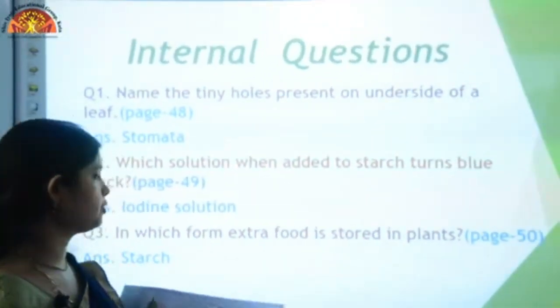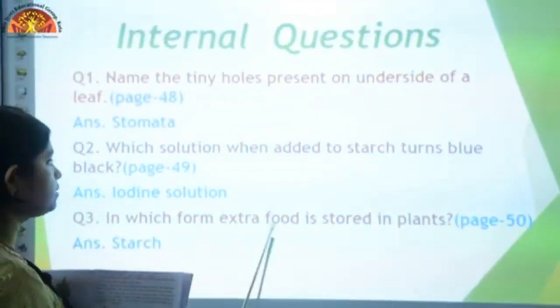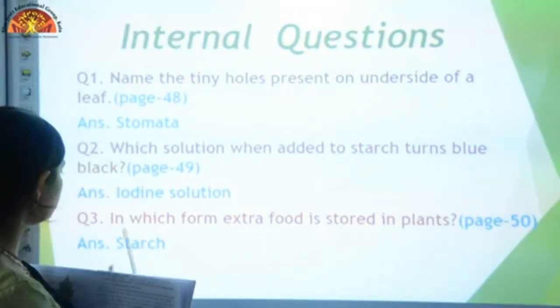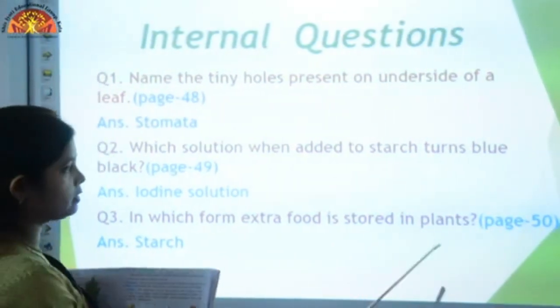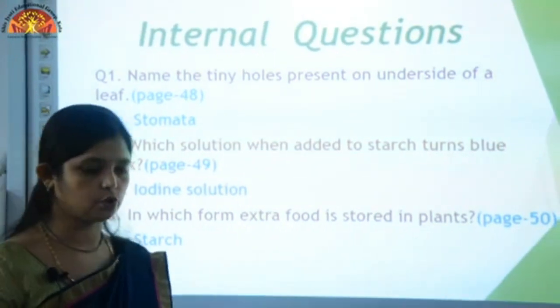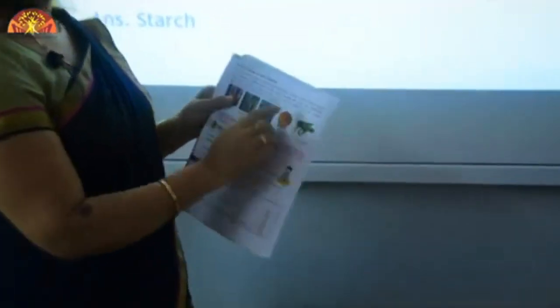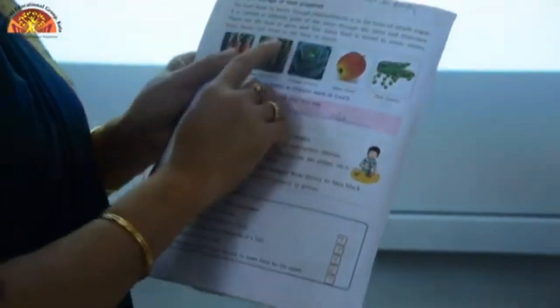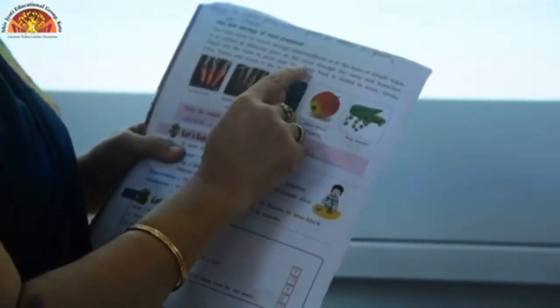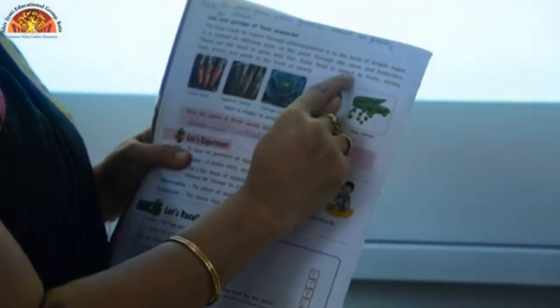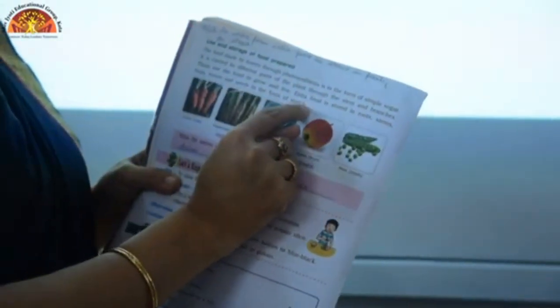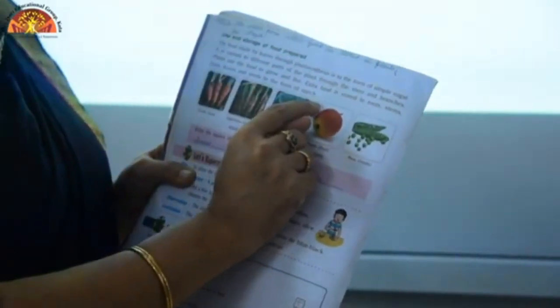Next question: in which form is extra food stored in plants? Answer is starch, and it is given on page number 50. Open page number 50 under the heading 'Use and Storage of Food Prepared' — the second last line: 'Extra food is stored in roots, stem, fruits, leaves and seeds in the form of starch.' Underline starch and write the question above the paragraph.